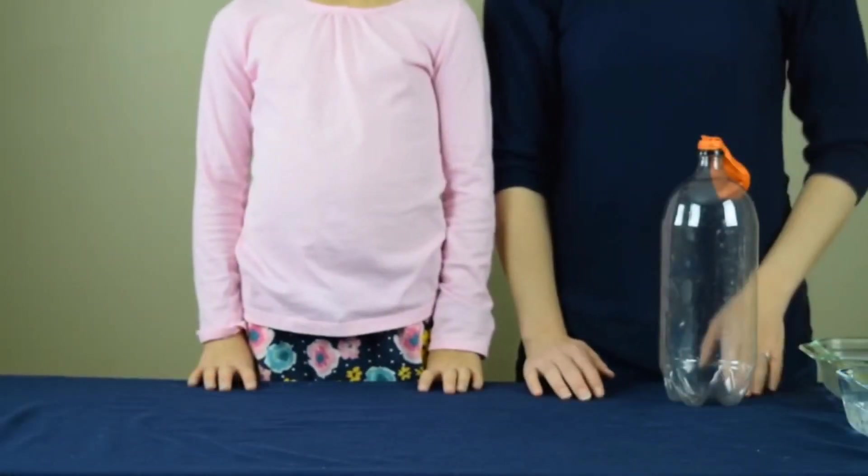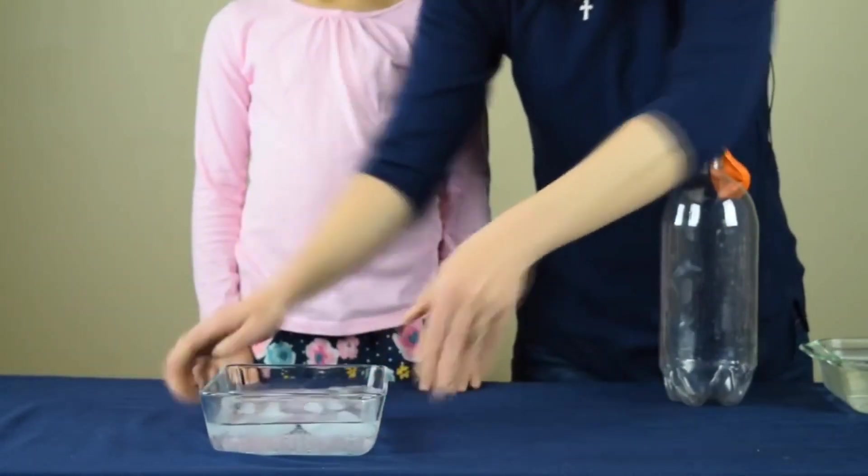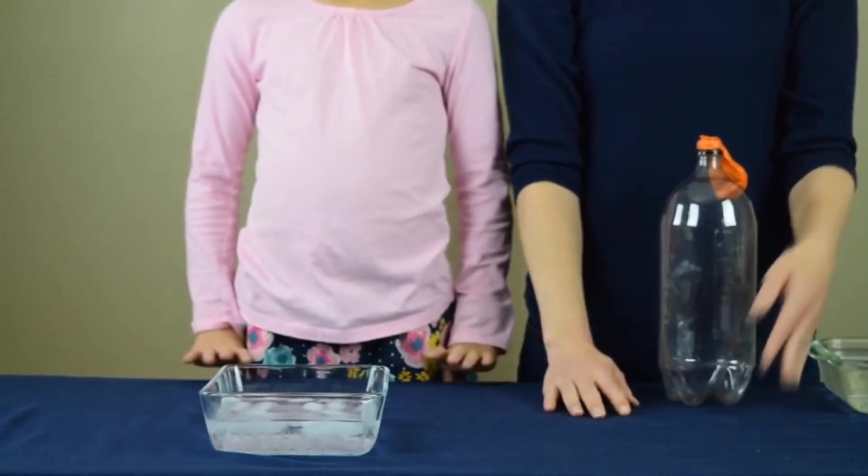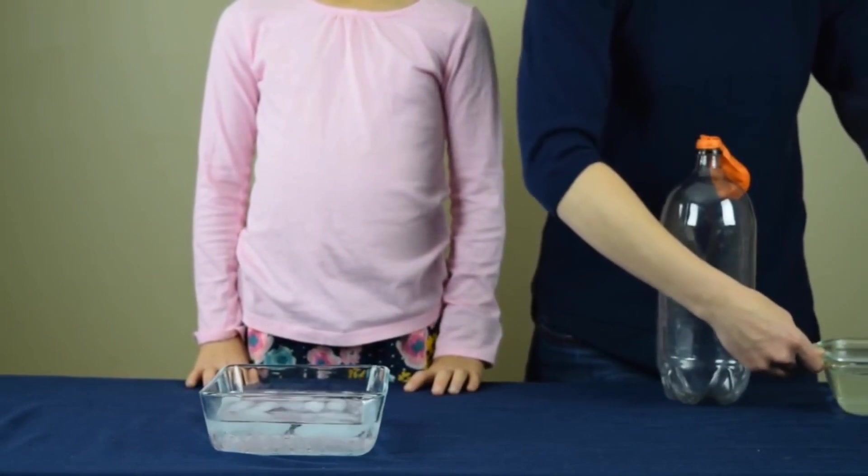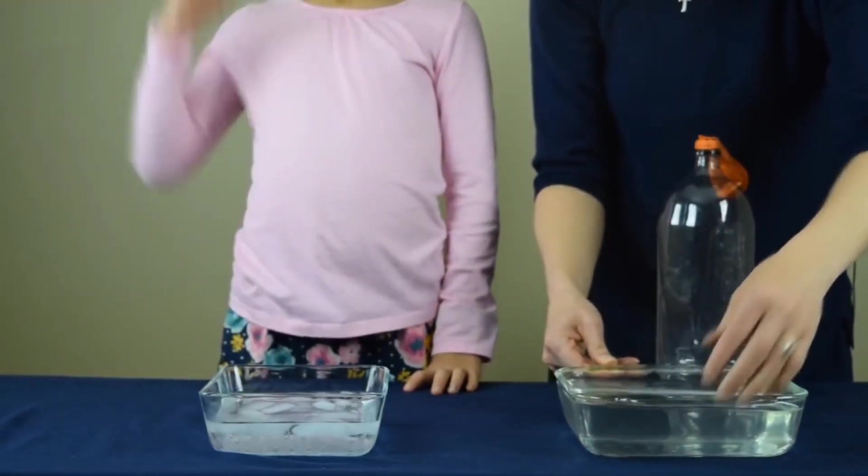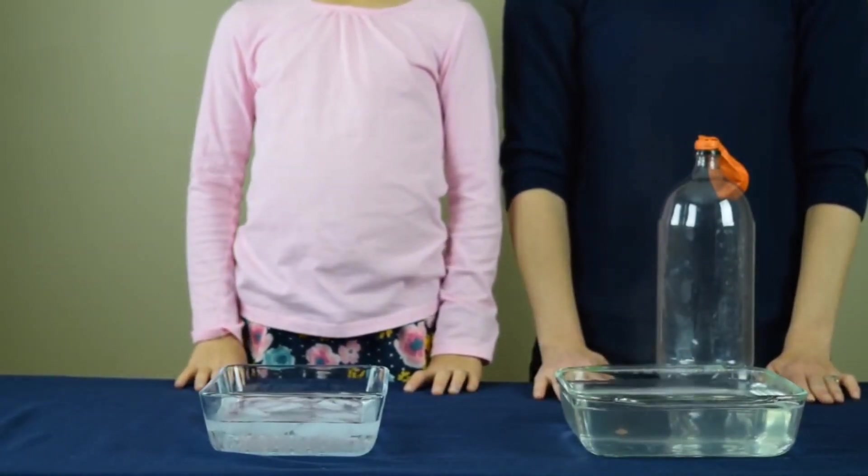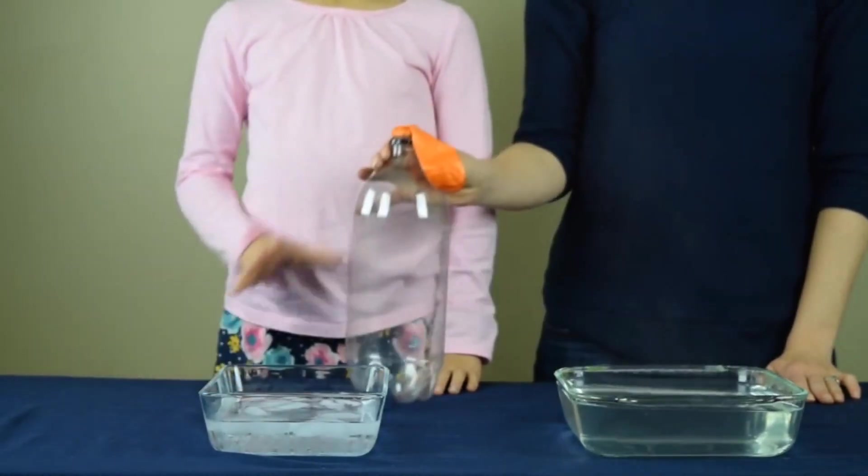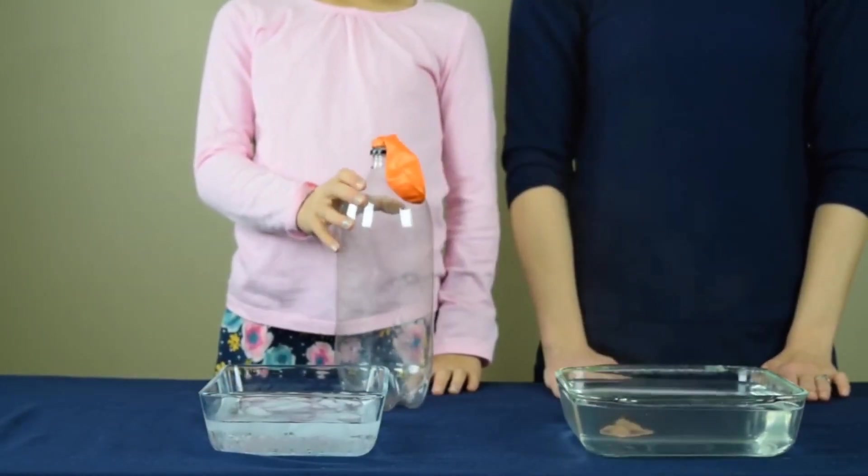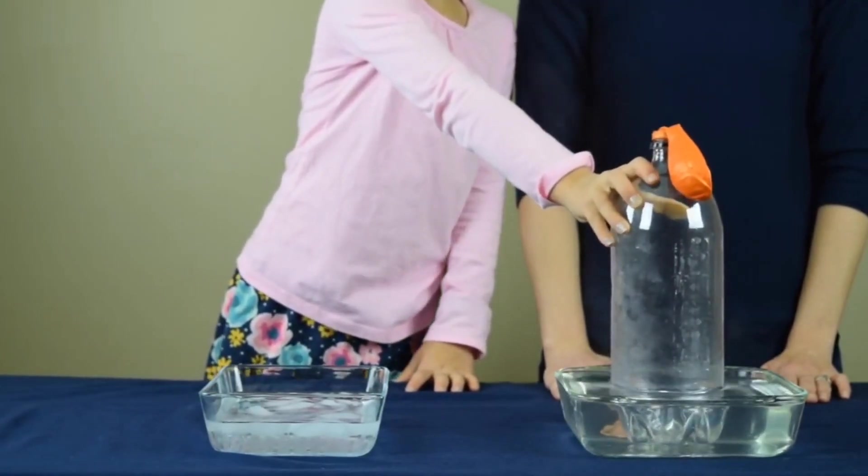Take two pans of water. In the first pan, take icy cold water. And in the second pan, take hot boiling water. Now, take the bottle with the balloon and place it into the pan having hot water.